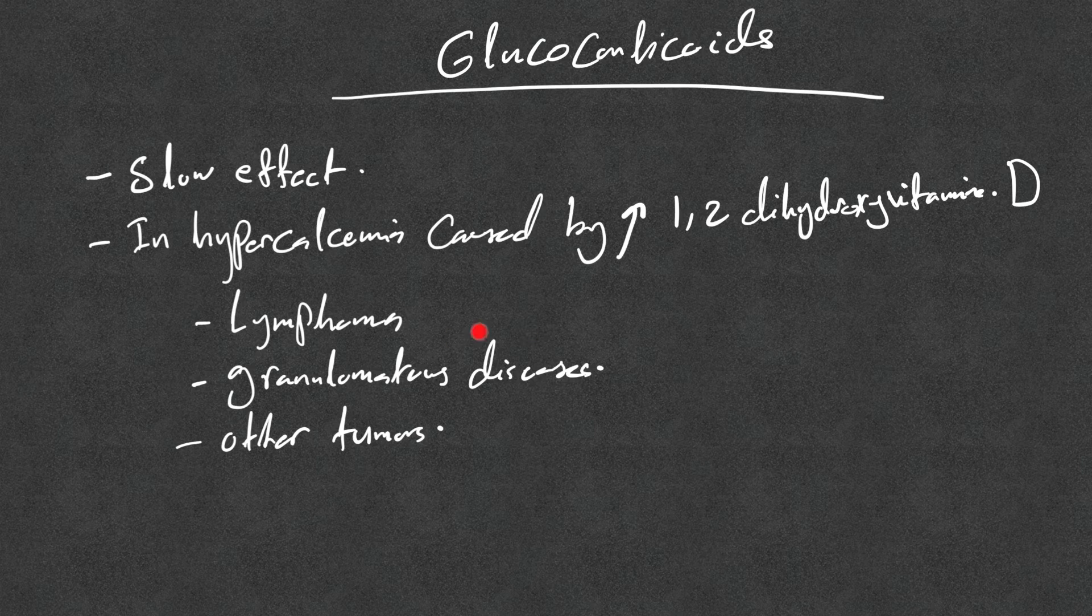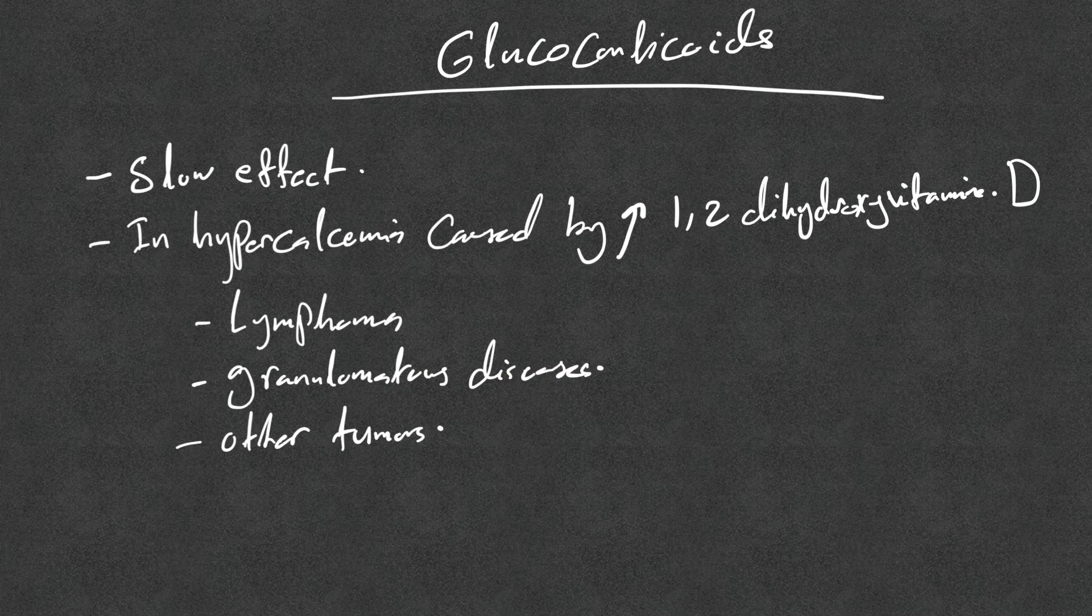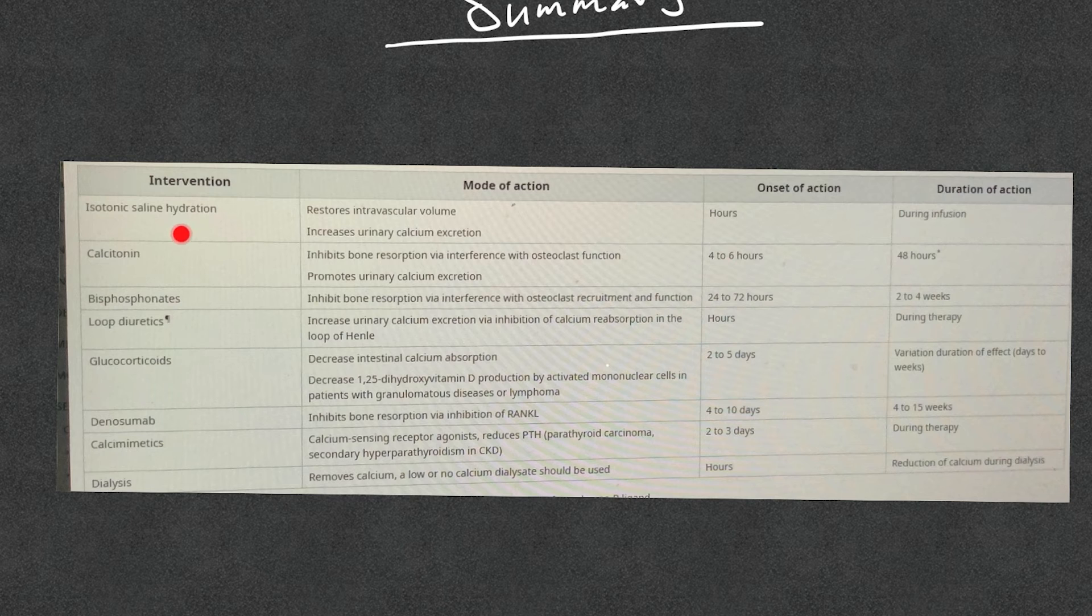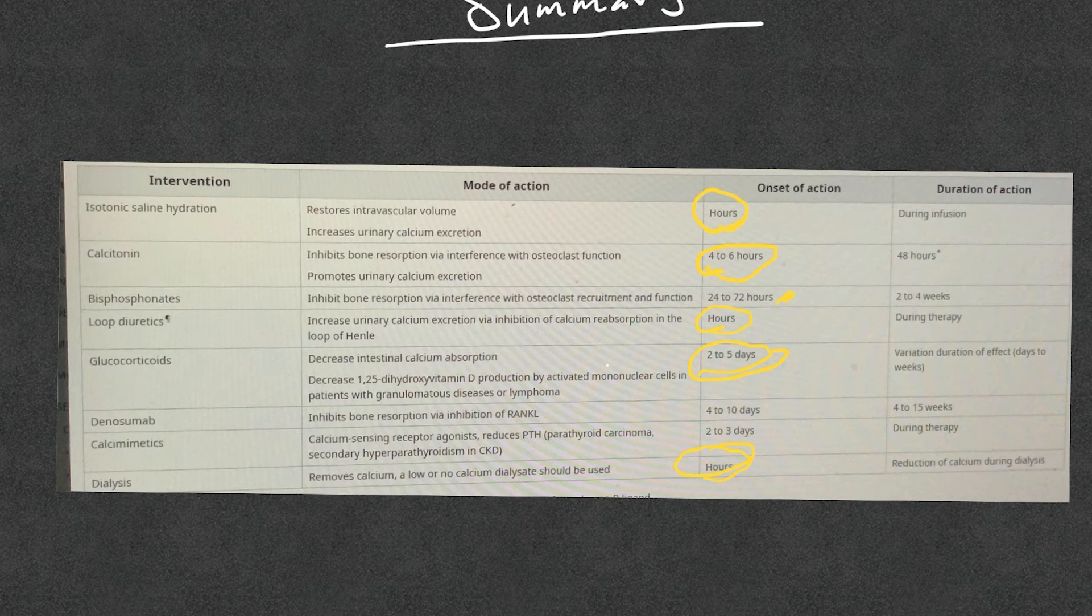I borrowed this table from UpToDate where there is a summary of these treatments. You see the onset of action: we have hours for the fluid resuscitation, 4 to 6 hours for calcitonin, bisphosphonate they take days, loop diuretics hours if we use it, and glucocorticoid 2 to 5 days. Dialysis of course very effective in hours, and denosumab takes 4 to 10 days. Again, we use it only if there is contraindication to bisphosphonate or there is refractory hypercalcemia.